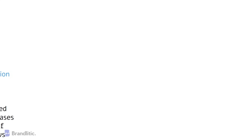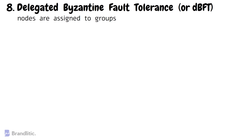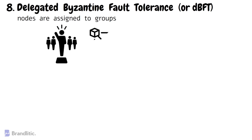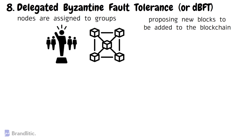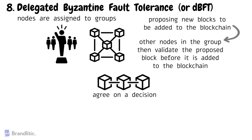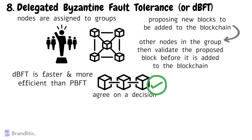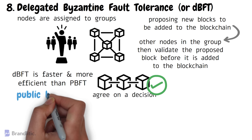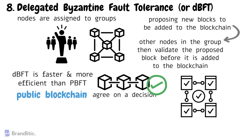Number eight: Delegated Byzantine Fault Tolerance, or DBFT. DBFT is again a variant of BFT where nodes are assigned to groups, each with a designated leader known as a delegate. These delegates are responsible for proposing new blocks to be added to the blockchain, and other nodes in the group validate the proposed block before it is added. This process reduces the number of nodes that need to agree on a decision, making consensus faster and more efficient. DBFT is generally considered faster and more efficient than PBFT due to its dedicated network model, and is particularly useful in public blockchain networks where fast transaction processing and high throughput are important, while still maintaining high security and reliability.